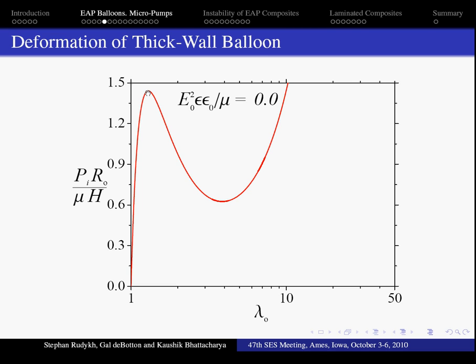We see that with the increase of the inflation pressure, the balloon slowly expands until critical pressure is reached and further increase of the pressure leads to sudden jump in the size of the balloon to a new stable state. This phenomenon is commonly denoted snap-through.